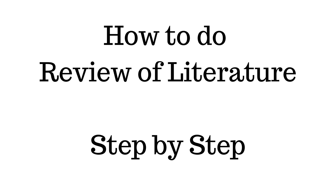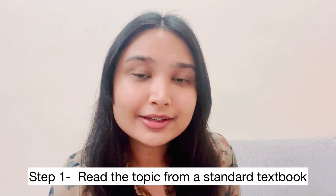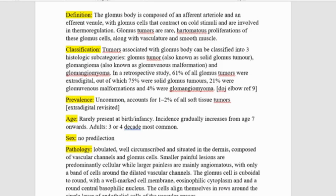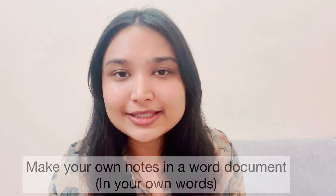Start your review of literature from any standard textbook of your choice — I usually do it from Brooks. Read the topic that your case is about. As you read, whatever points you find are important or relevant to your case report, start writing them down separately in a word document. It's better that you don't just copy paste from the textbook but rather write them in your own words, making your own personal notes in word format from a standard textbook.